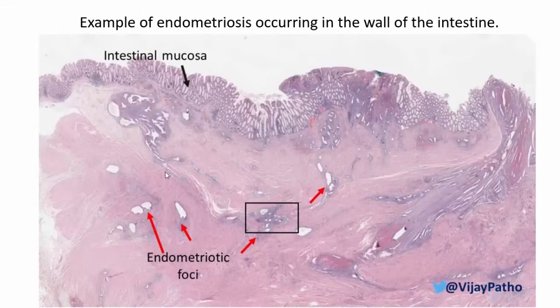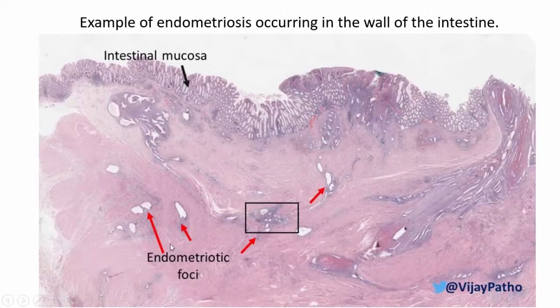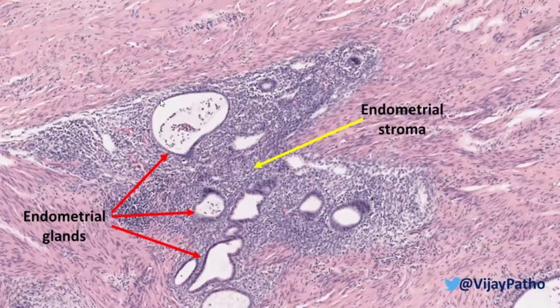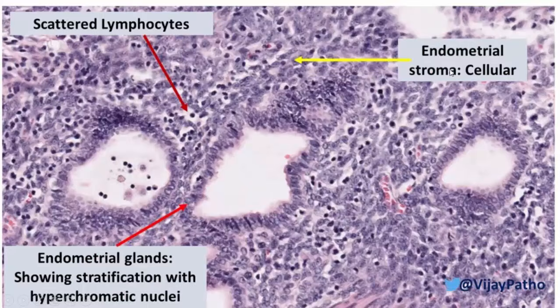Here is an example of endometriosis occurring in the wall of the intestine. That is the intestinal mucosa with columnar epithelium. In the submucosa as well as in the muscularis propria, you can see various dilated cyst-like structures — these are the endometriotic foci. At higher magnification, you can make out endometrial glands with adjacent endometrial stroma. By definition, endometriosis requires evidence of endometrial glands and stroma. If either is absent, you must demonstrate hemosiderin-laden macrophages indicating previous hemorrhage. Higher magnification shows endometrial glands with stratification and vascular stroma, along with scattered inflammatory cells in the form of lymphocytes.